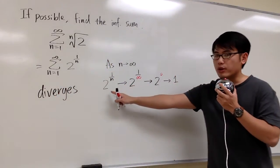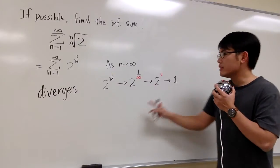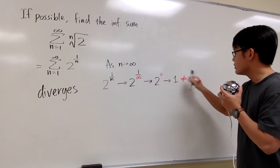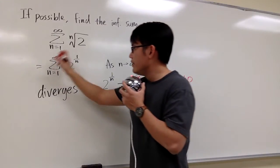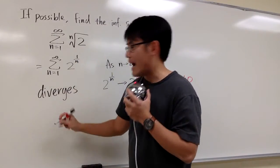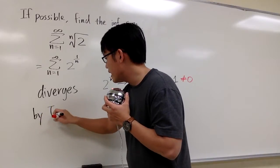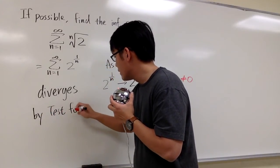Because you see the expression right here, this expression approaches 1, this is not approaching 0, this is not equal to 0. So we can say that this series diverges by test for divergence.